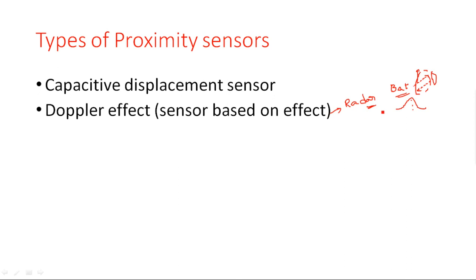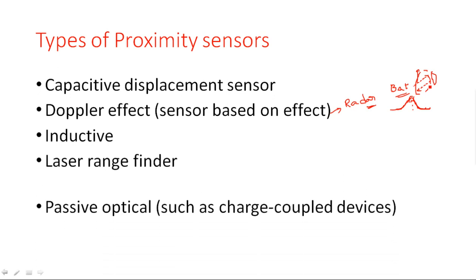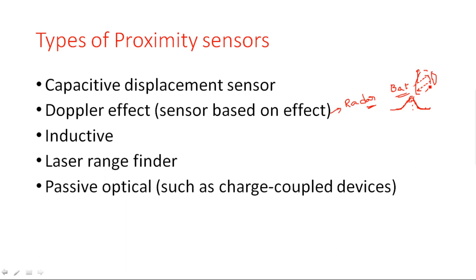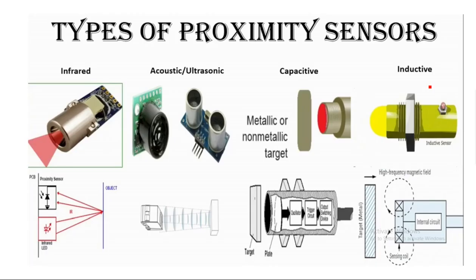This Doppler effect principle is also applied in proximity sensors. When an object is far away, there is no detection. As the object comes nearer, the proximity sensor activates and detection is at peak level. When the object moves away again, detection decreases. Other types include inductive displacement sensors, laser range finders, passive optical sensors such as charge-coupled devices, and passive thermal infrared devices.